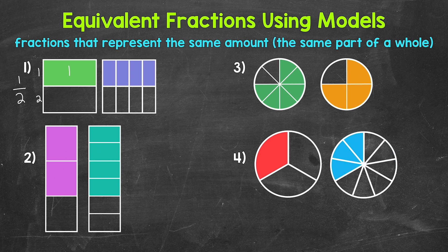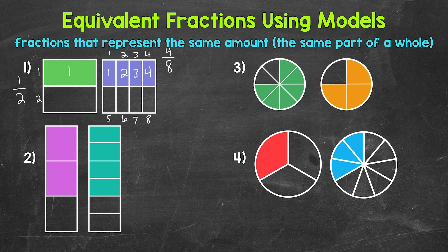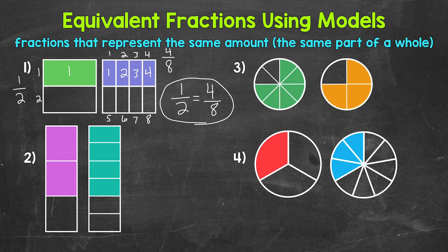The other square was divided into eight equal parts, so eight is our denominator. And four parts are shaded in, so four is our numerator. The square on the right is representing four eighths. Going back to what we talked about earlier, we can see that the same amount of each square has been shaded in — the same part of the whole square. So one half and four eighths are equivalent fractions, and we can write that out by putting an equal sign in between the fractions.